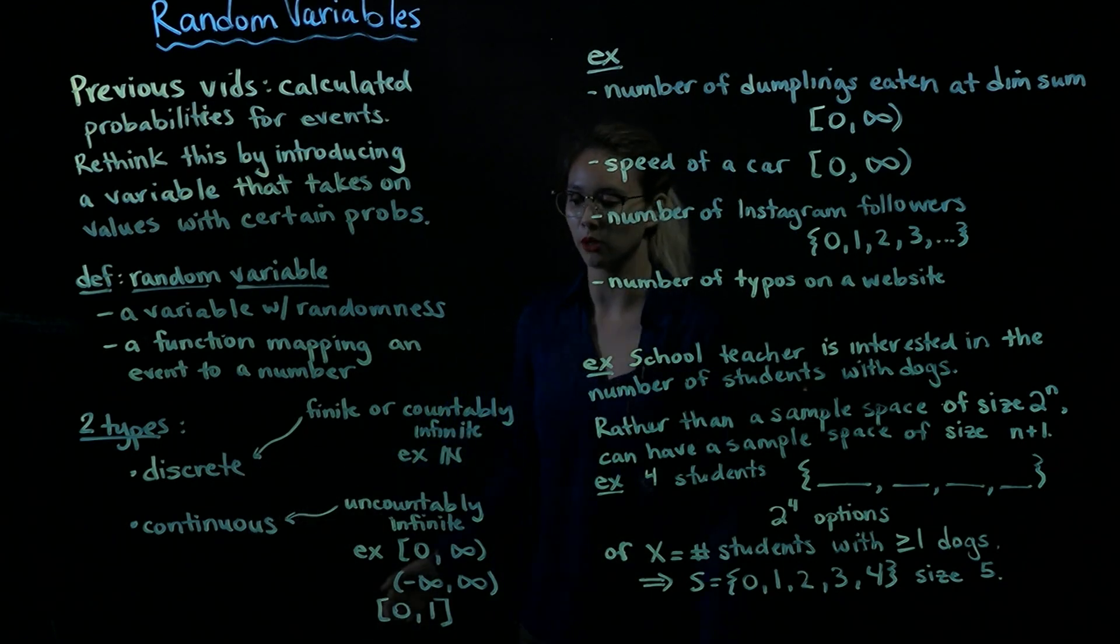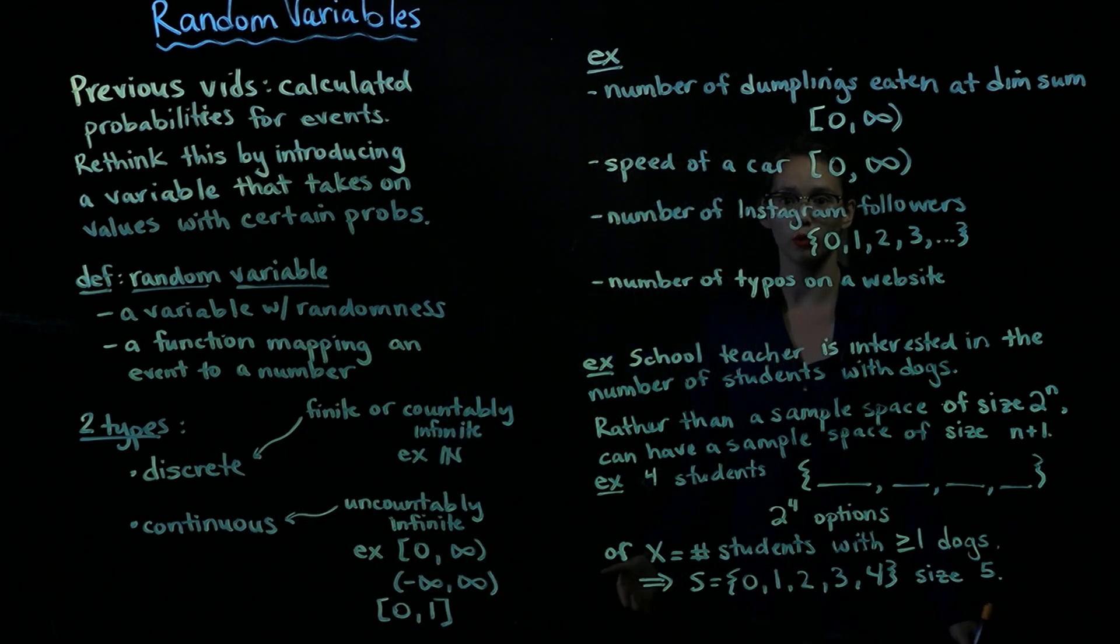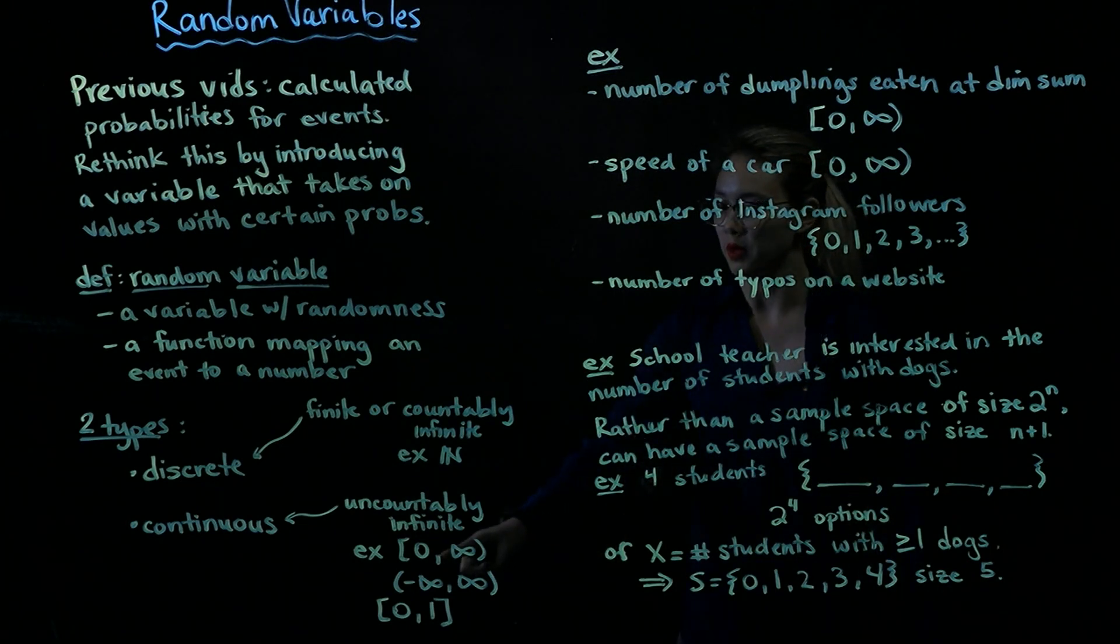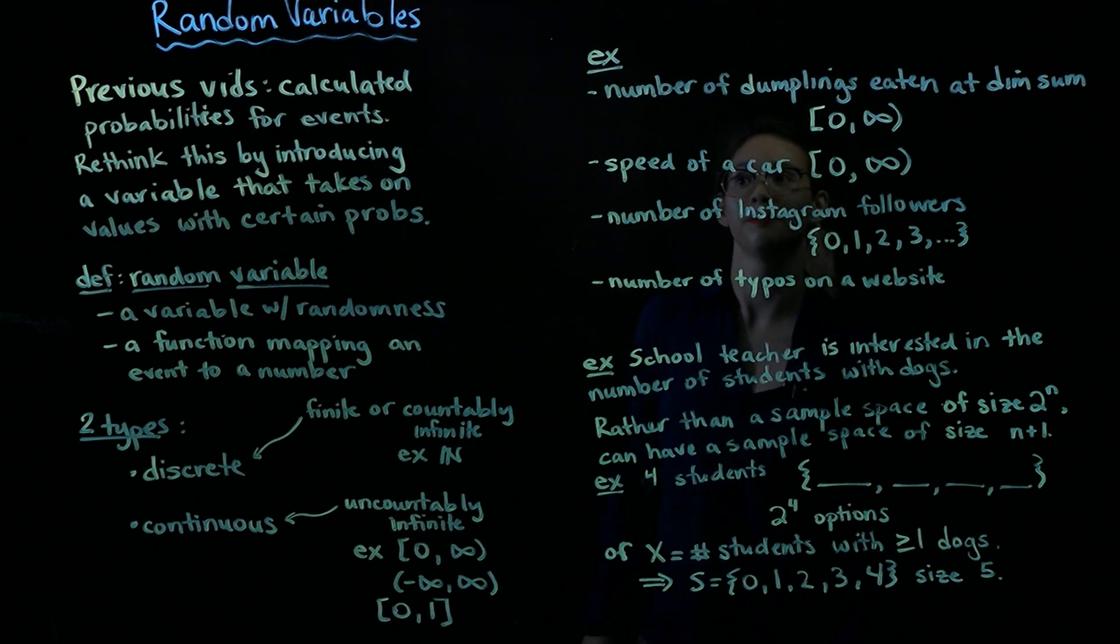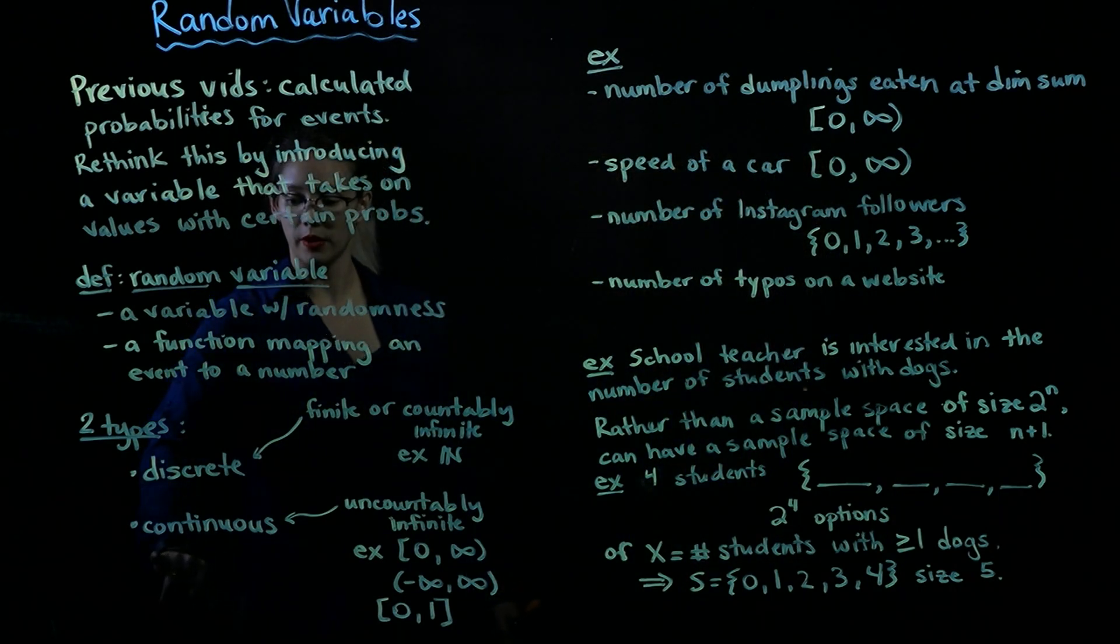Now we can talk about continuous random variables. So here we have values in some interval or maybe a bunch of intervals. So we have uncountably infinite many possibilities here. Some intervals that you see pop up a lot would be going from 0 to positive infinity. Or we might see any real number, so from negative infinity to positive infinity. Or we might see something in the interval 0, 1. And these are all examples of values that a continuous random variable could take on.